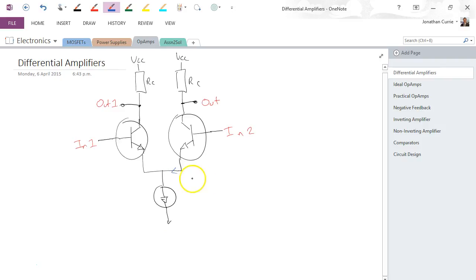We've got a couple of currents here, IE1 and IE2, which sum together to form I, and Q1 and Q2 up here. So this is a basic approximation of how a differential amplifier might look.